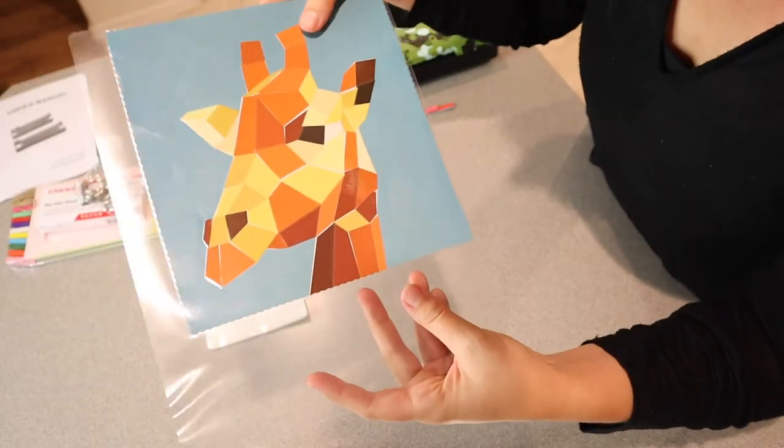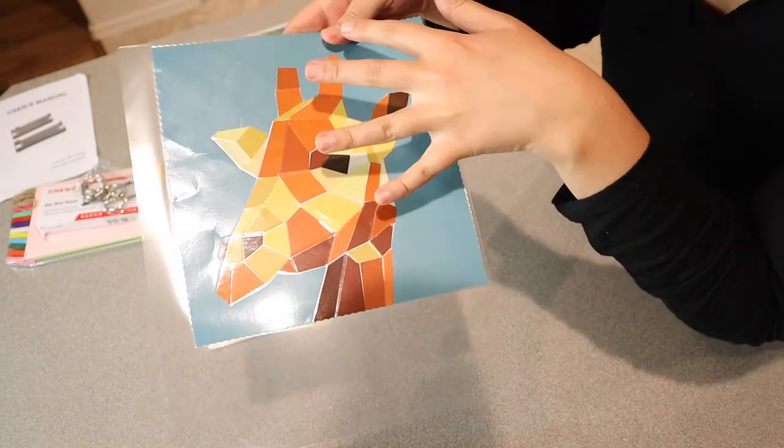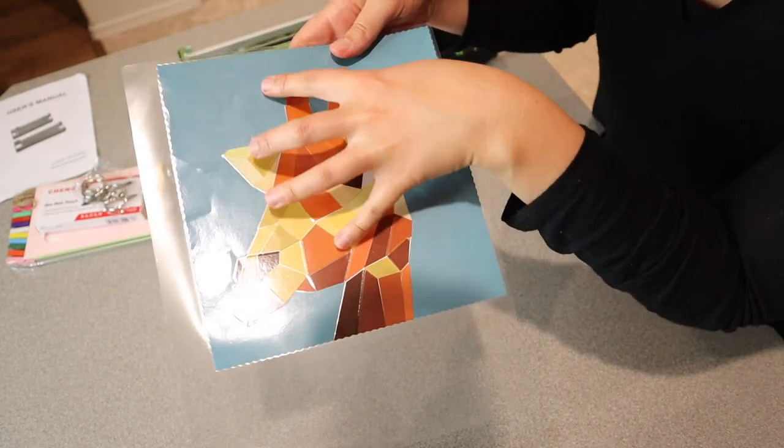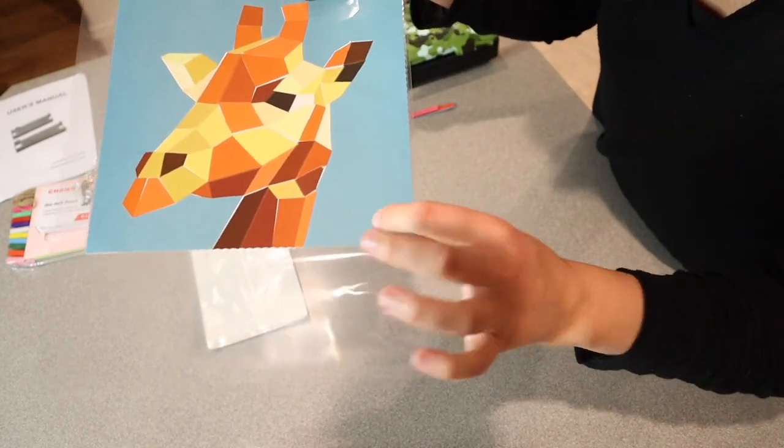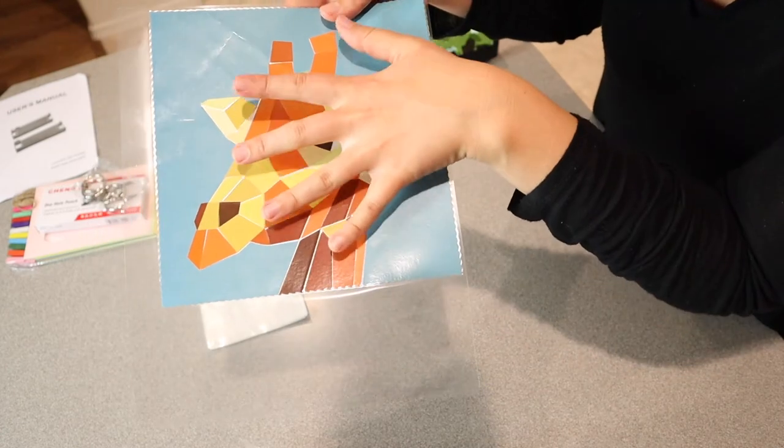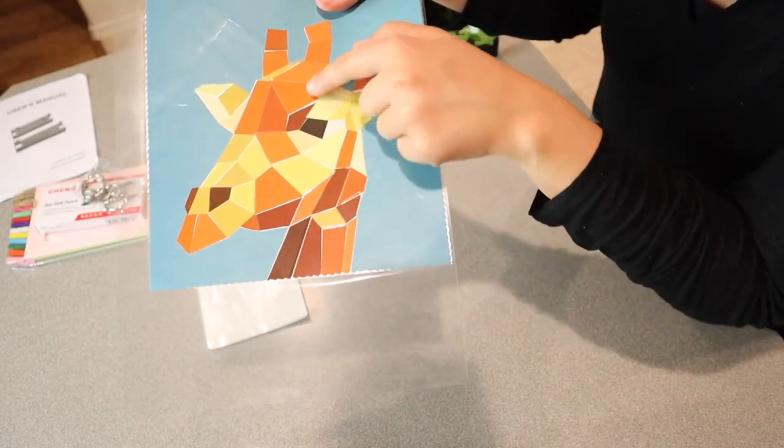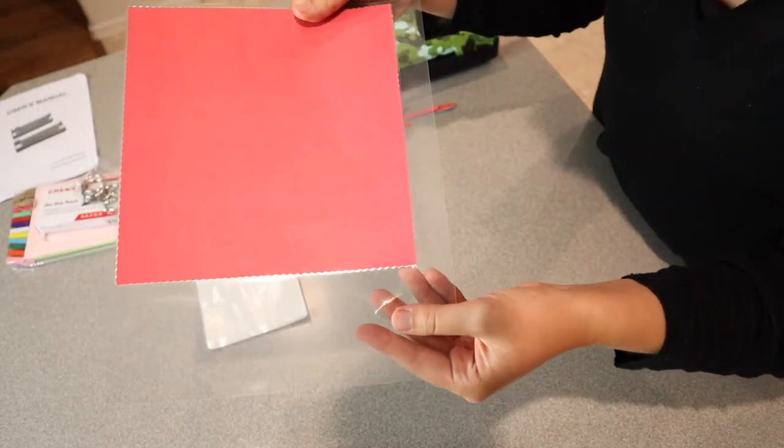So when you look at something that's laminated to tell if it actually did a good job or not, you're looking for a lot of bubbles in it or unlaminated areas or sections or unsealed edges. And all of these edges are sealed. There are no bubbles in this, which it was a little bit of a crinkly piece just because these are stickers on paper. But I'm really happy with this.